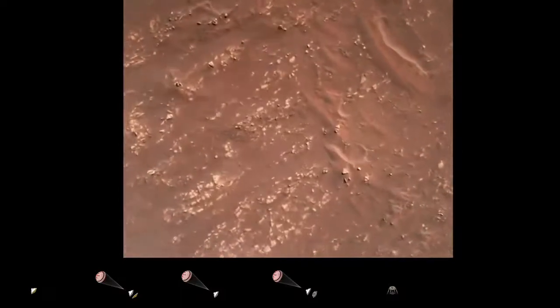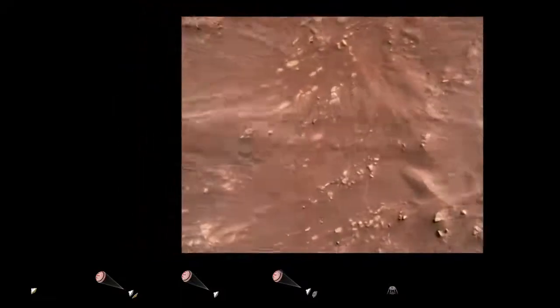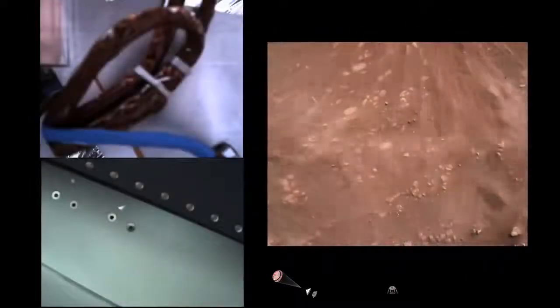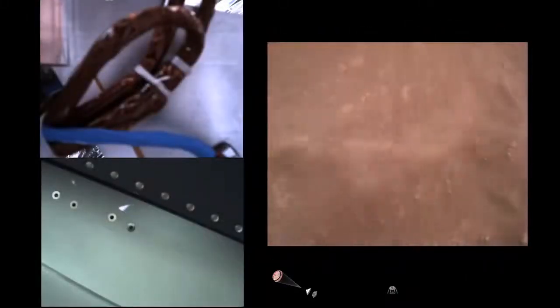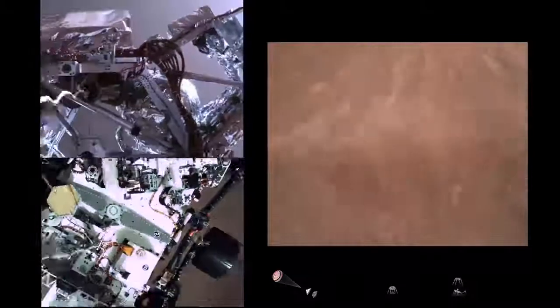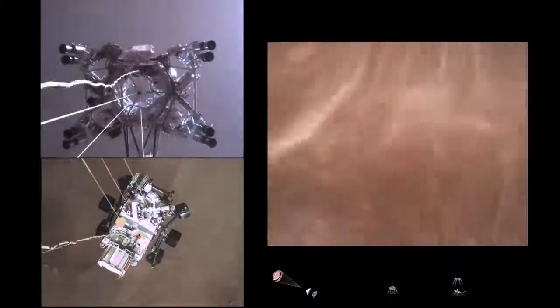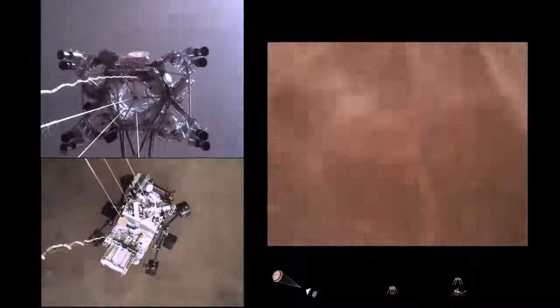We have started our constant velocity accordion, which means we are conducting the sky crane, about to conduct the sky crane maneuver. Sky crane maneuver has started. About 20 meters off the surface.